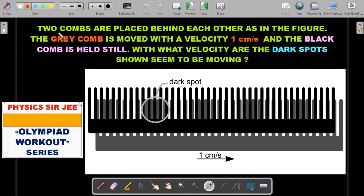Here we go: Two combs are placed behind each other as in the figure. The gray comb is moved with a velocity of 1 cm/s and the black comb is held still. The top one is the black comb which is held still, and the gray one from behind is being pulled toward the right at 1 cm/s. With what velocity are the dark spots shown seeming to be moving? As you watch, the teeth from the gray comb overlap with the teeth from the black one. There are places where teeth block light from passing through, creating dark spots. This is a dark spot; there are dark spots elsewhere also. As you move this gray comb, the dark spots should be moving with some velocity in terms of this 1 cm/s.